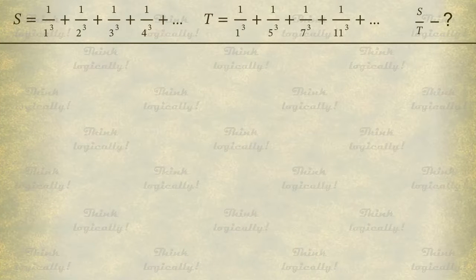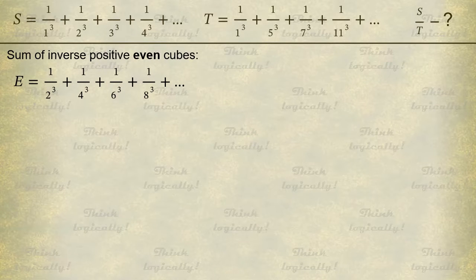At the start, we chip away the sum of inverse cubes of even numbers, the multiples of 2. So we find the sum of inverse positive even cubes denoted by letter E for even. Quite obviously, each denominator is a multiple of 2 cubed.